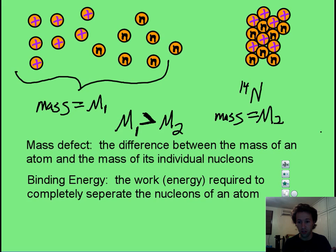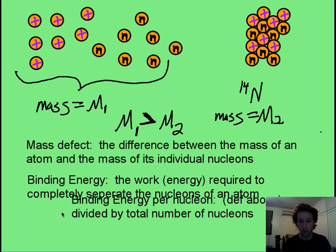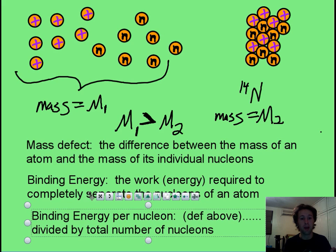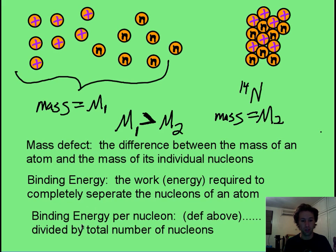Another definition is, not a very difficult one to understand after those, is that if you want the binding energy per nucleon, you just take this first definition, and then you divide it by the total number of nucleons that you would have.